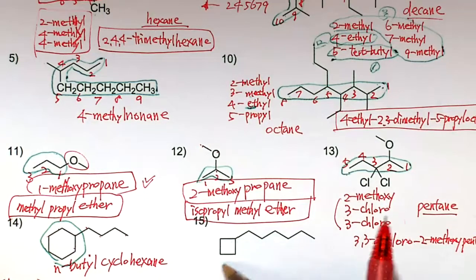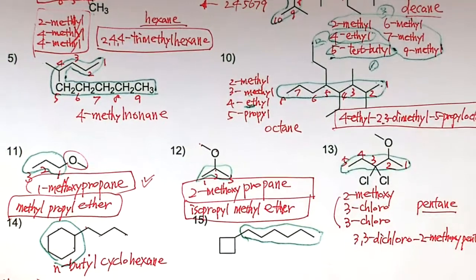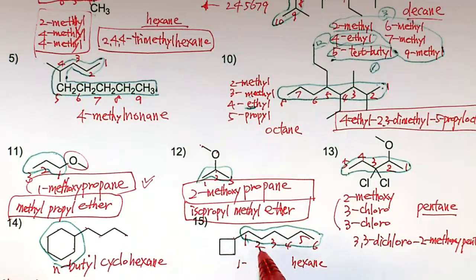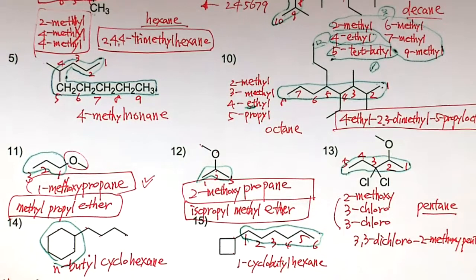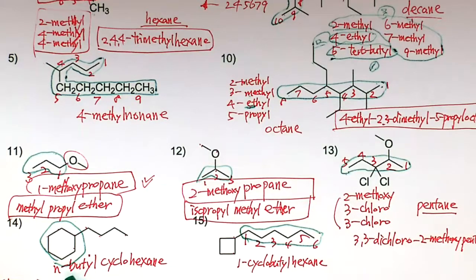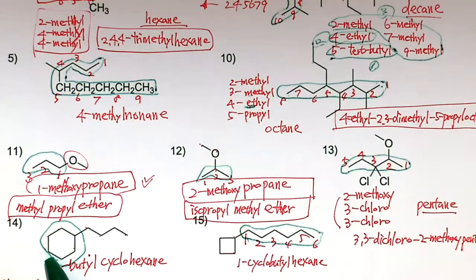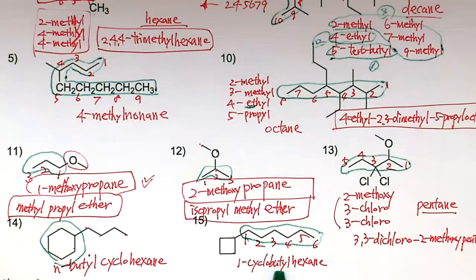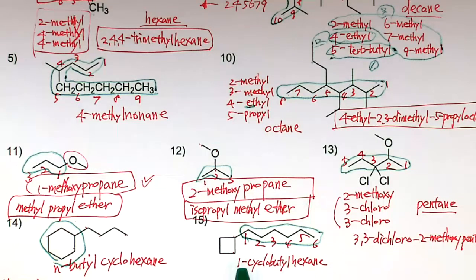Longest chain is hexane — 1-2-3-4-5-6. Carbon 1 has a branch: 1-2-3-4 carbons in a ring — cyclobutyl group. So the name is 1-cyclobutylhexane. We write the number here because if there were multiple branches on the hexane chain, position would matter. When there's only one substituent on a ring, numbering isn't necessary since 1-butyl, 2-butyl, and 6-butyl cyclohexane would all be the same compound.